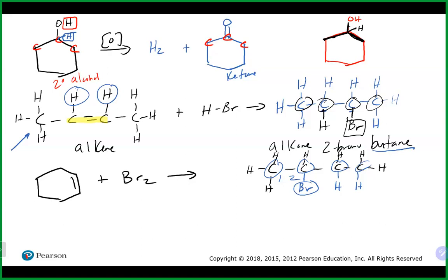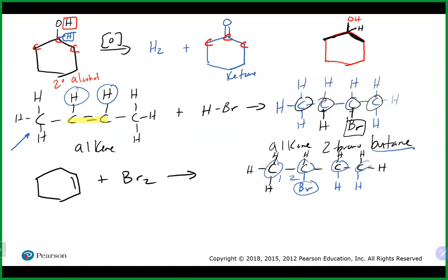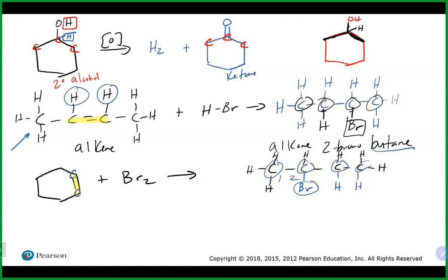Lastly we have a cycloalkene, which works the same way as the previous one. Everything happens at the carbon-carbon double bond. Since we're adding Br2, we make it into a single bond and add one bromine to each carbon of the former double bond. This is a symmetrical addition — we're adding two of the same things, one to each side.